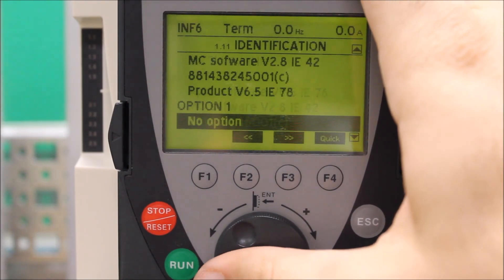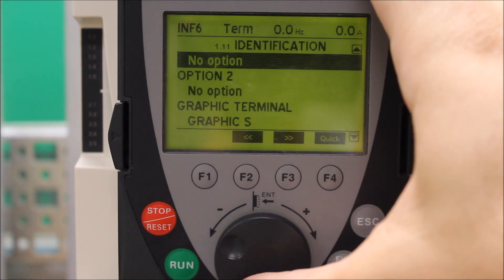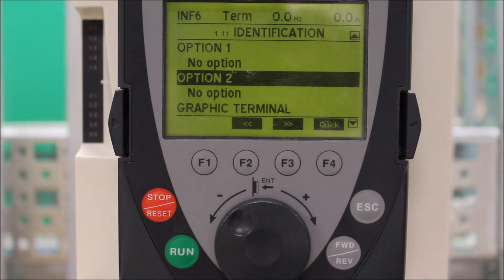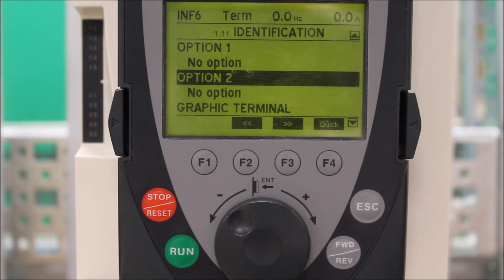And in here, you want to scroll down and you'll look at two things, option one and option two. So if you have a communication option card or any other option cards that can be utilized on these drives and if it says no option and if you have an option card actually installed,